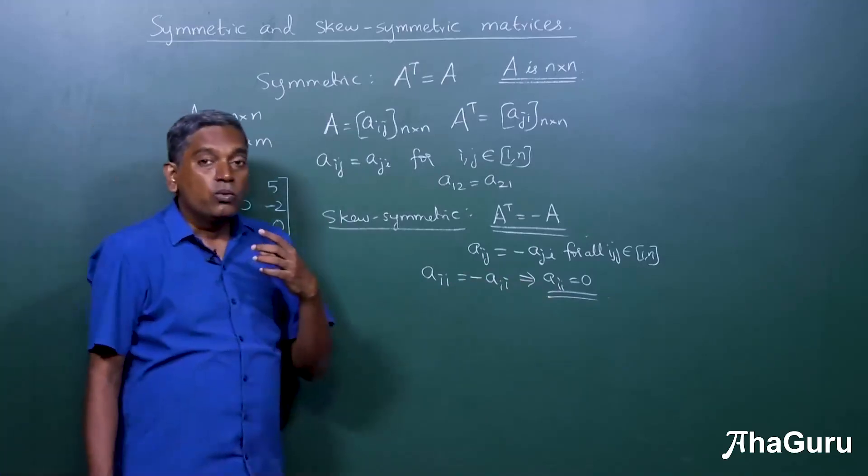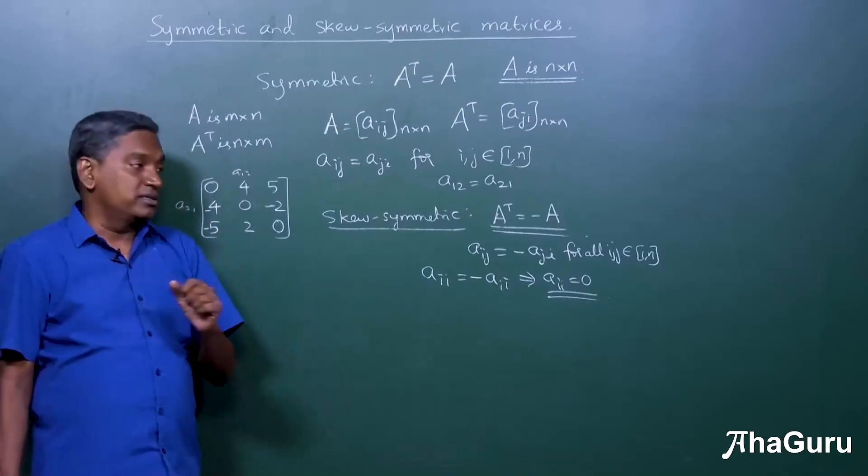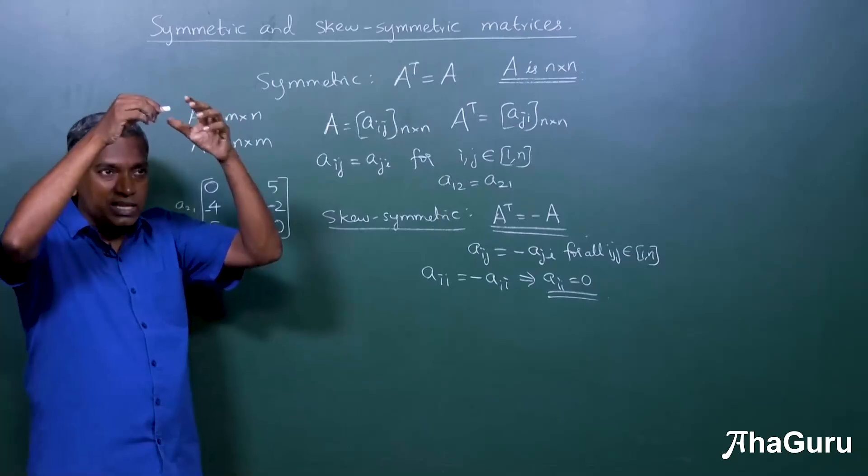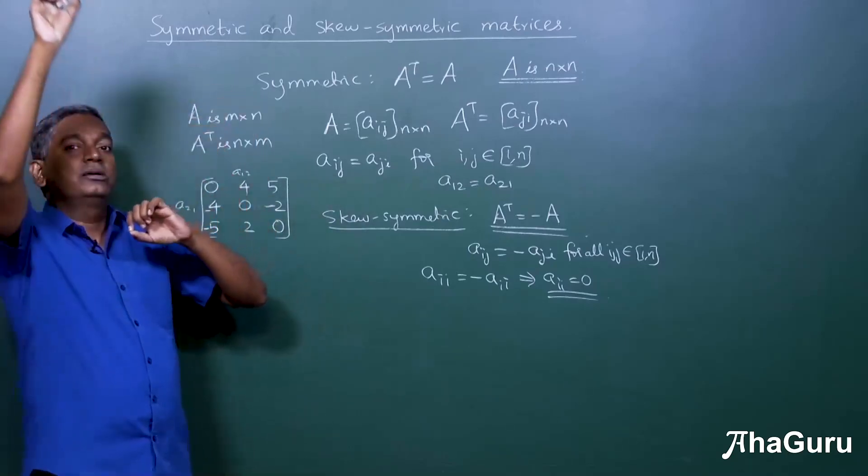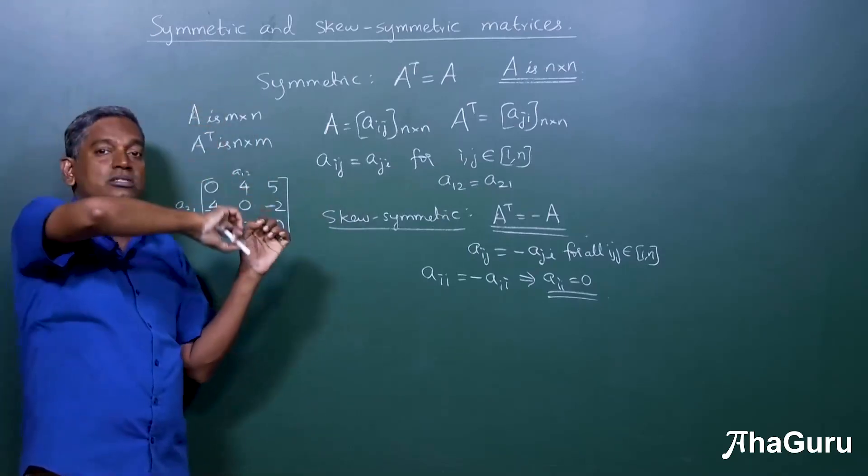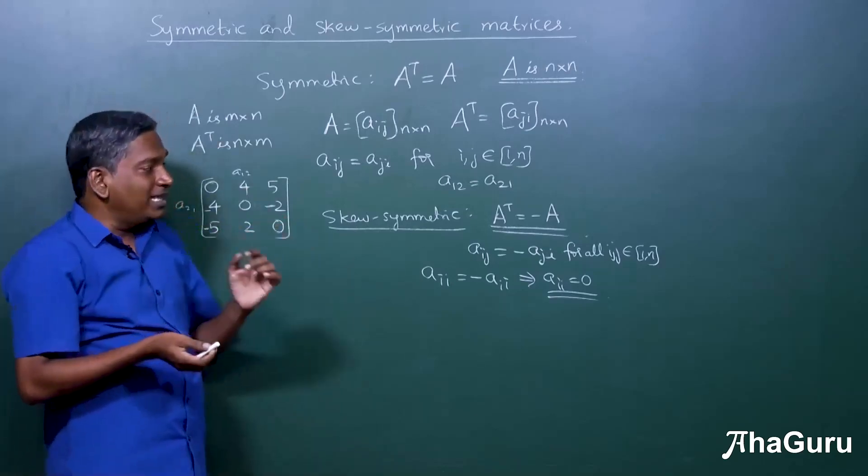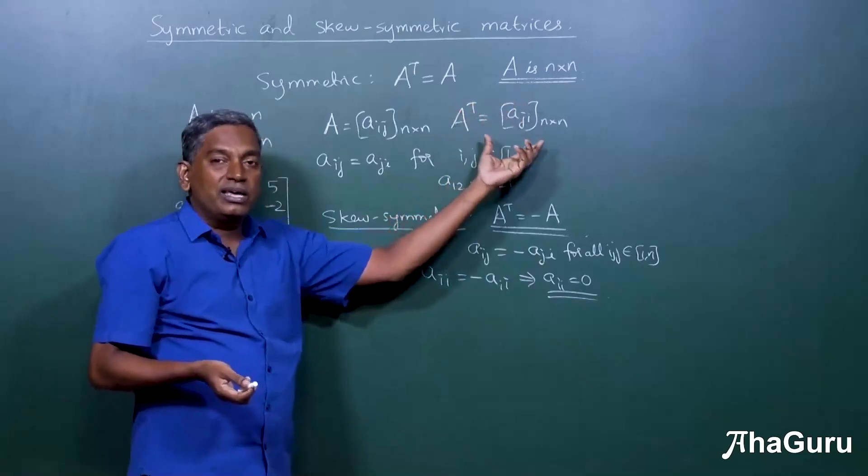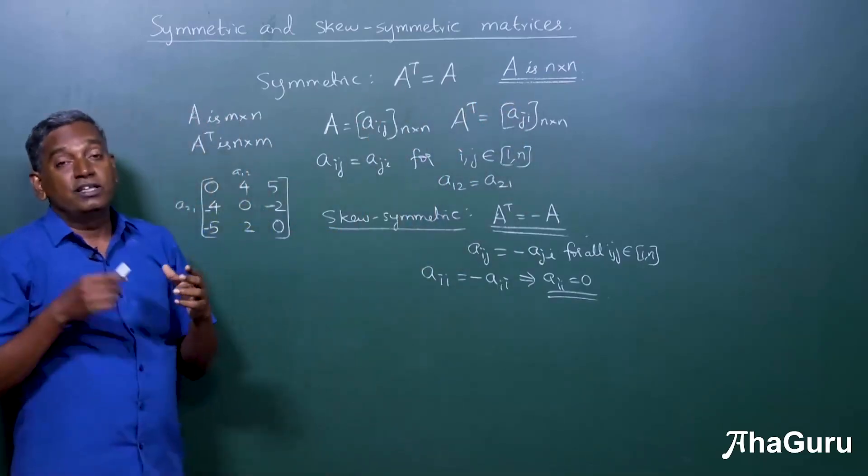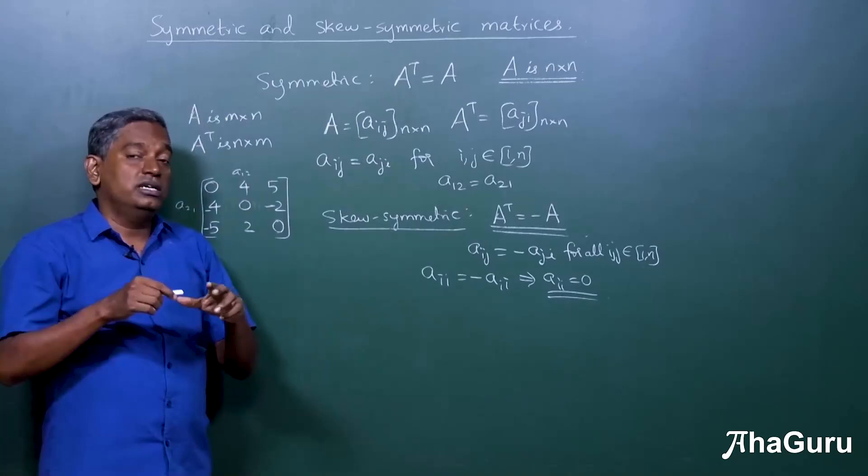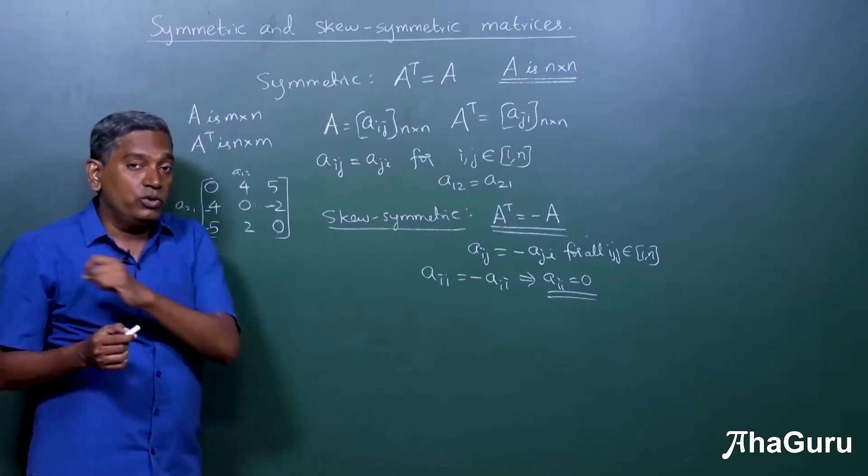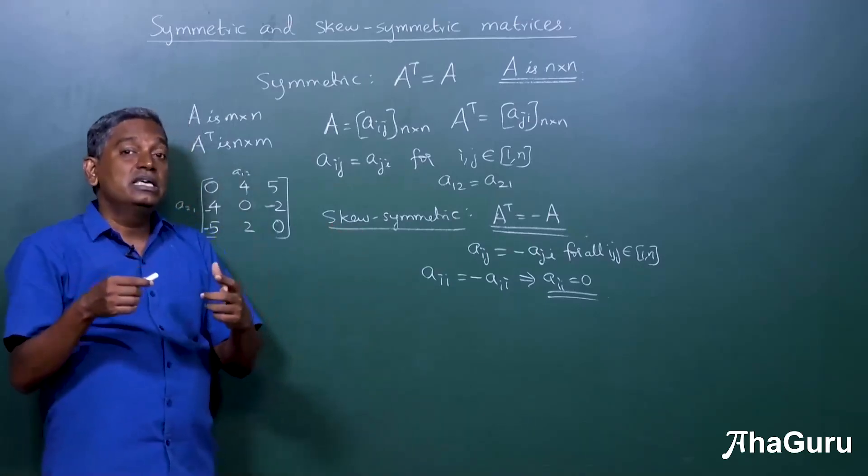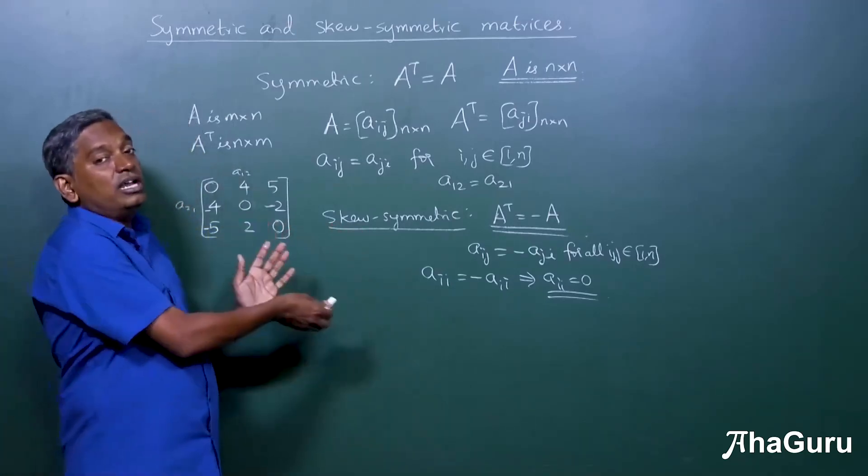Now, why do we learn about symmetric and skew-symmetric matrices? You can see that symmetric and skew-symmetric matrices have certain properties. Like by looking at them, it's easy to understand what the elements are going to be. If you know something on the top, you also know what is it going to be in the bottom. But you may think, sir, that happens very rarely. How commonly are you going to have symmetric or skew-symmetric matrices? Well, whether they occur naturally or not is not a big problem.